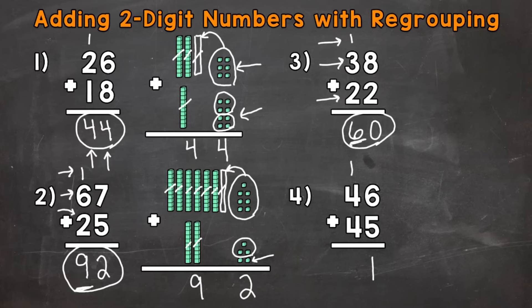Now we have 1 ten plus 4 tens plus 4 tens, or 10 plus 40 plus 40. So 1 plus 4 is 5. Plus 4 gives us 9. So we have a 9 in the tens place.